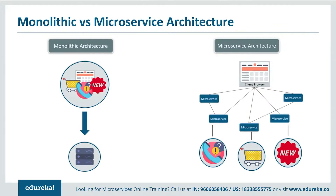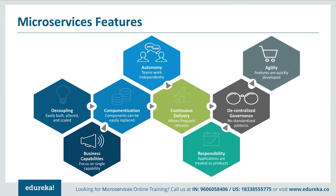Let's summarize the difference between both architectures. Monolithic architecture had a single framework for all features on a single database, whereas microservice architecture has different microservices for each feature, each handling its own database. The features that made developers shift to microservices include: applications were easily built, altered, and scaled; they focused on a single capability; all components could be easily replaced; teams worked independently; frequent releases were allowed; applications were treated as products; there were no standardized patterns; and most importantly, features were quickly developed.